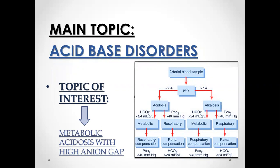Acid-base disorders occur when the arterial blood sample pH is increased or decreased. If the pH is greater than 7.4, then a person might suffer from metabolic alkalosis or respiratory alkalosis, and if the pH is less than 7.4, there are chances of metabolic acidosis or respiratory acidosis.